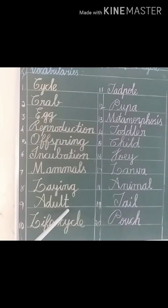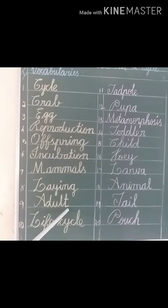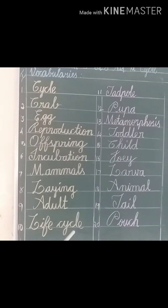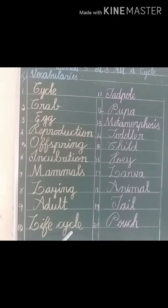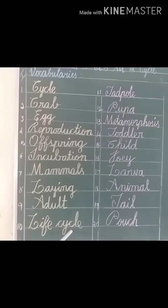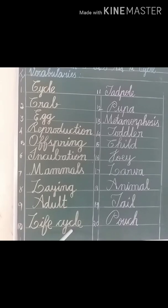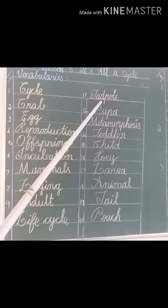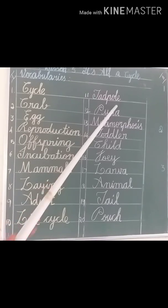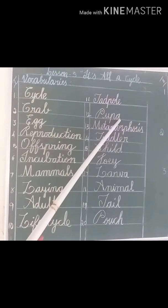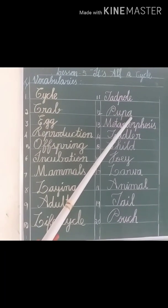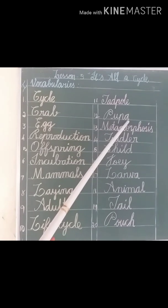Adult — it means a person or an animal that is fully grown. Life cycle — it means the series of forms into which a living thing changes as it develops. Tadpole — it is a small black creature. Pupa — it means an insect in the stage of development before it becomes an adult insect.